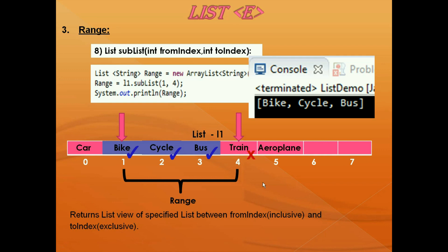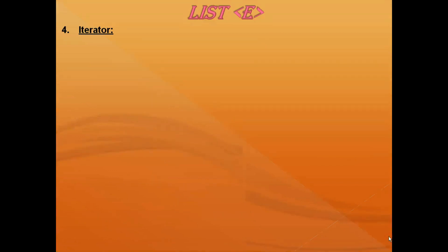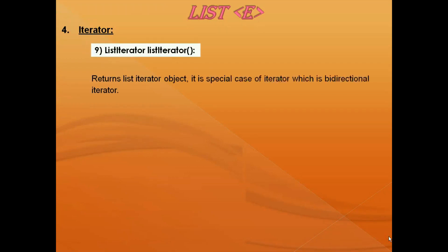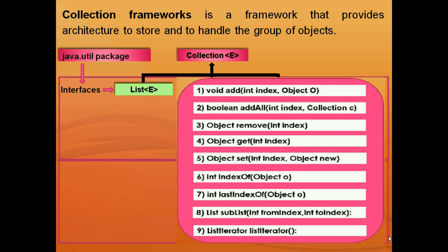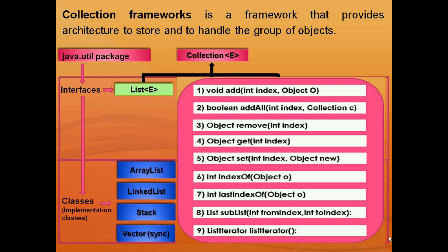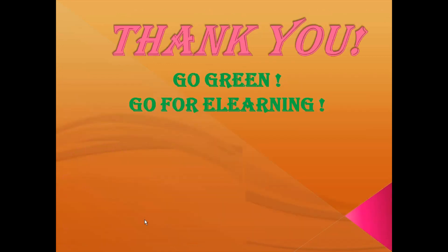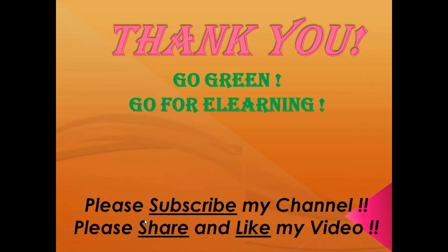Apart from these methods, list interface also provides one more method to retrieve objects one by one — that is listIterator(). This method returns a list iterator object. It is a special case of iterator which is a bi-directional iterator. I will discuss this in detail in another video about iterators — please check my playlist for more details. In this video I have discussed about list interface and its methods. In my next video we will start discussion in detail about list interface implementation classes of the collection framework. I hope you understood the concept and enjoyed this video. Please share, like, and subscribe. Thank you.